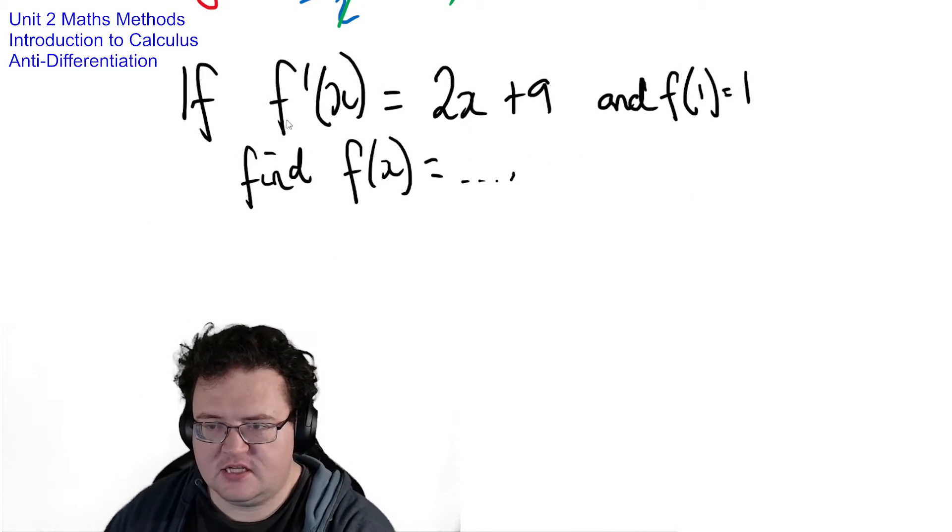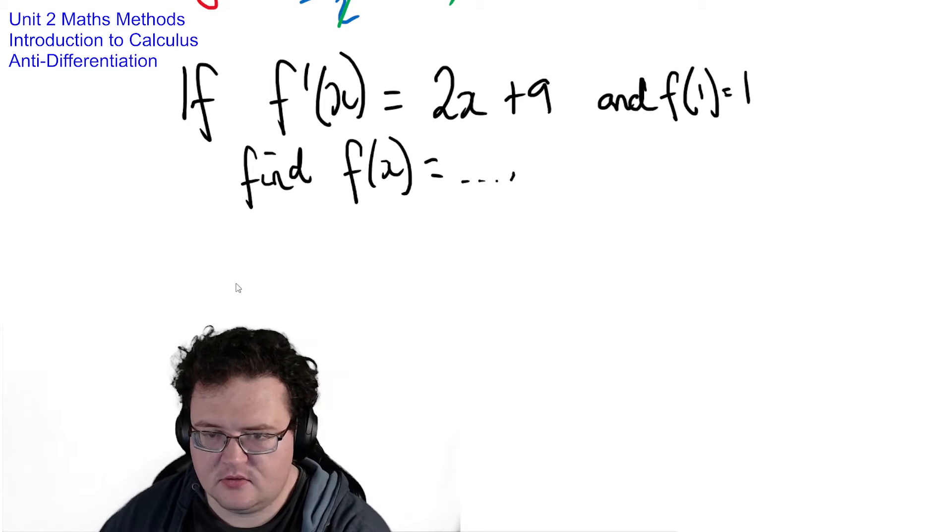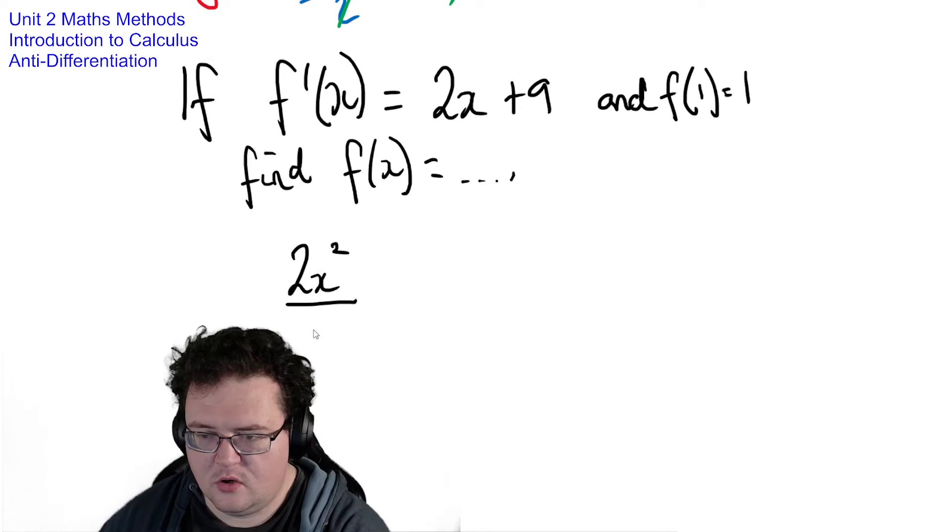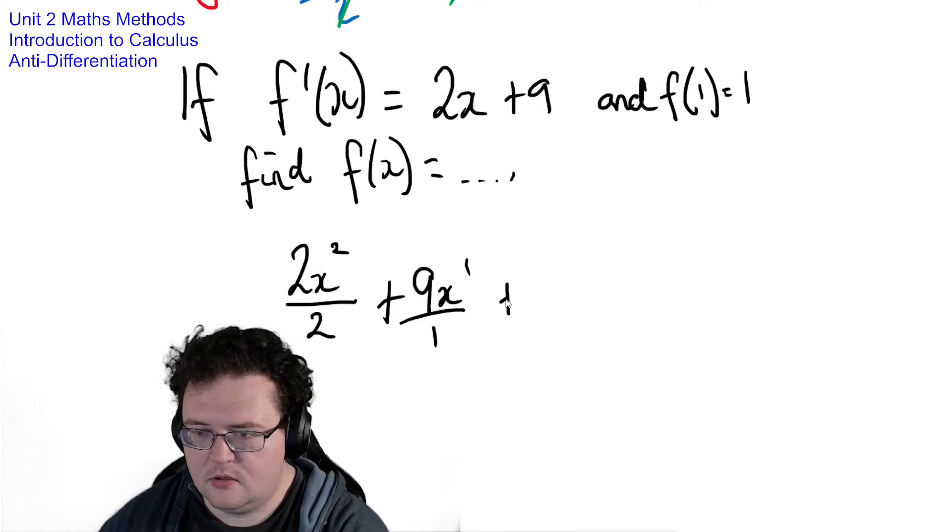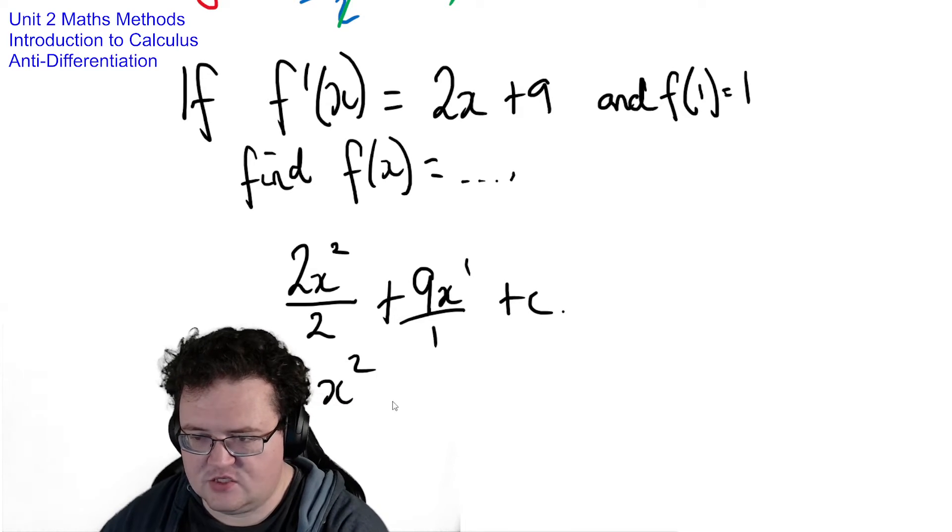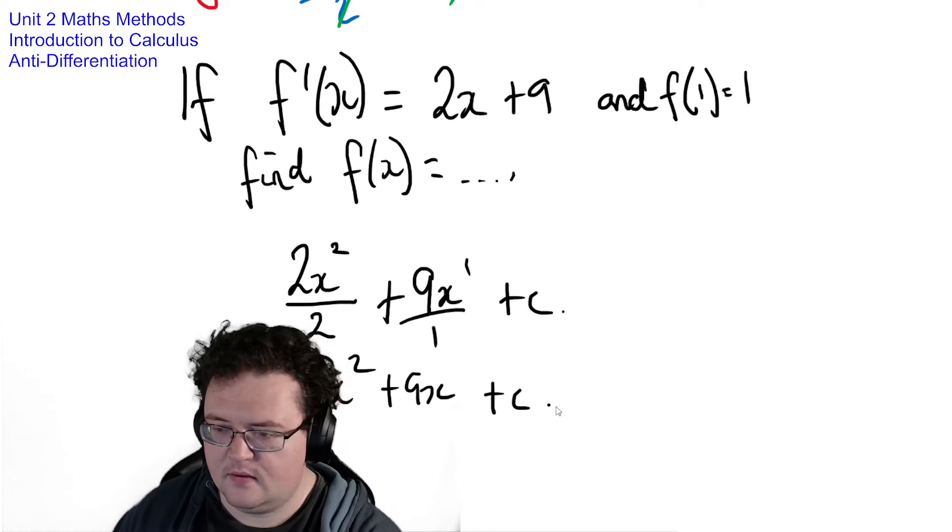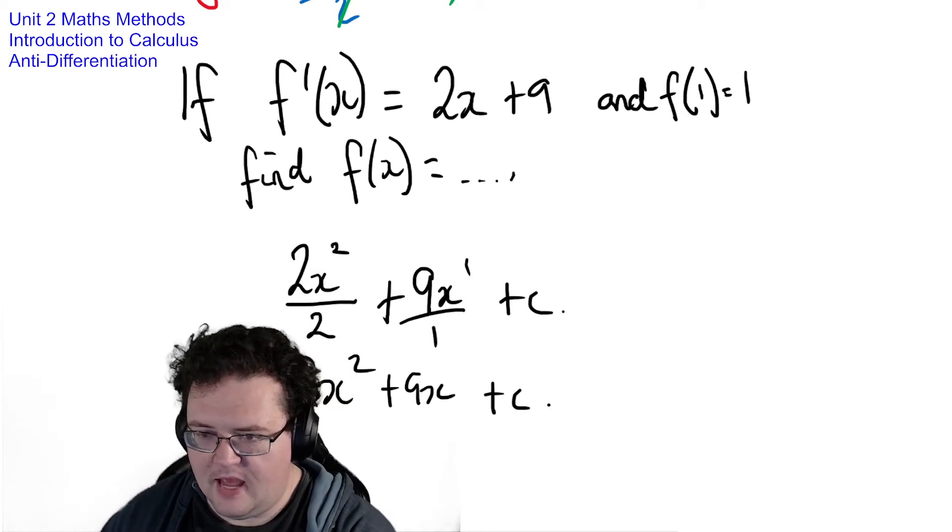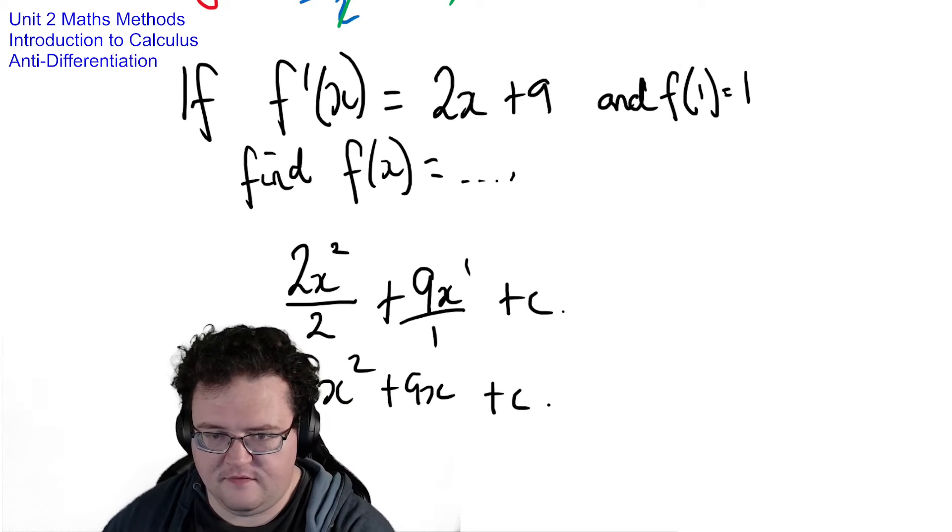So, first things first, let's look at f dash x and anti-differentiate it. Well, that means I'm going to have 2x, n plus 1 is going to be 2, all divided by the new power plus 9x to the 1 divided by 1 plus c. Cancel all that down and I have x squared plus 9x plus c and that should be my new f of x.